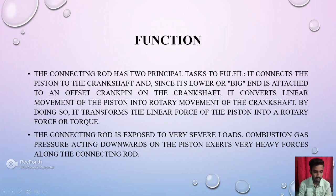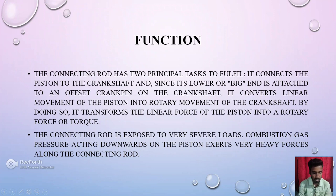Function: The connecting rod has two principal tasks to fulfill. It connects the piston to the crankshaft, and its lower end is attached to an offset crankpin on the crankshaft. It converts the linear movement of the piston into rotary movement of the crankshaft, transmitting the linear force of the piston into rotary force or torque.